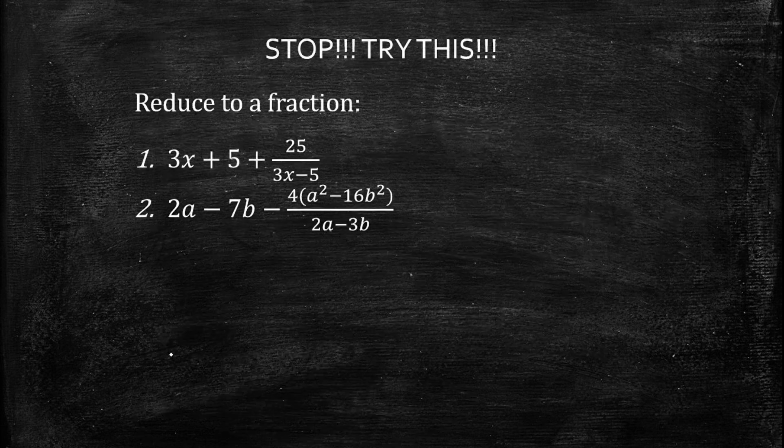Now try this at home — reduce to a fraction: number one is 3x plus 5 plus 25 over 3x minus 5; number two is 2a minus 7a plus 4 times a squared minus 16b squared, over 2a minus 3b. Try these on your own. Thank you and God bless everyone — I hope you enjoyed!